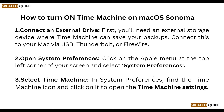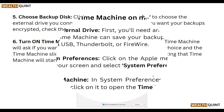Second is open System Preferences. Click on the Apple menu at the top left corner of your screen and select System Preferences. Third is select Time Machine. In the System Preferences, find the Time Machine icon and click on it to open the Time Machine settings.